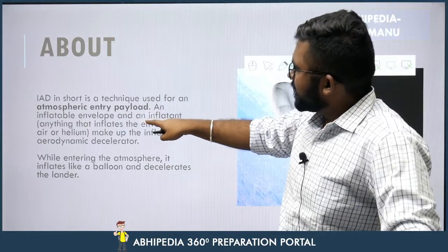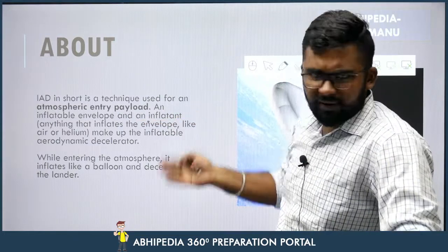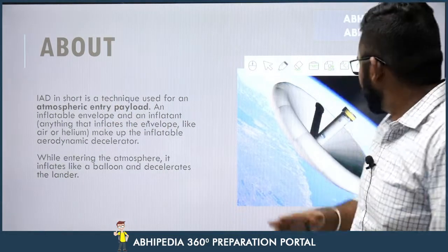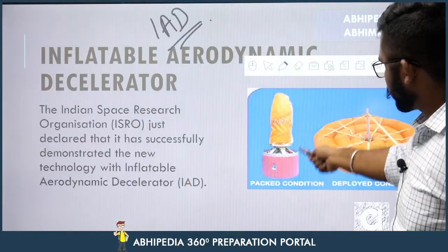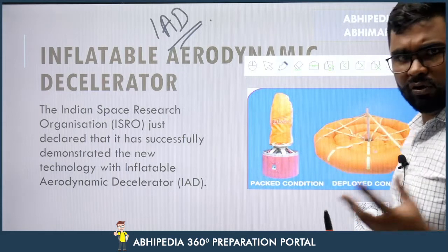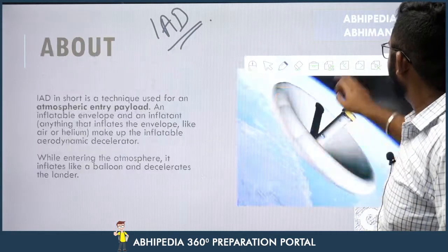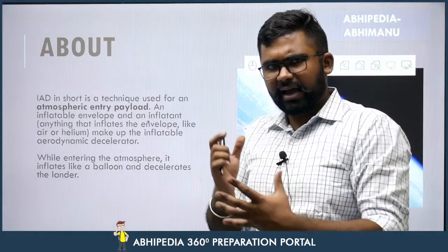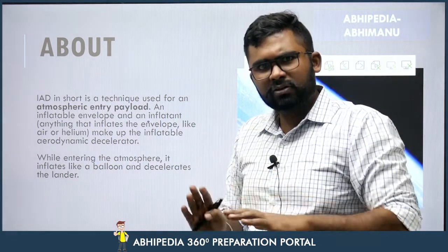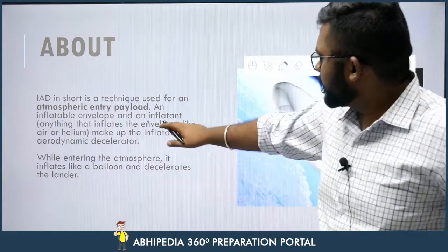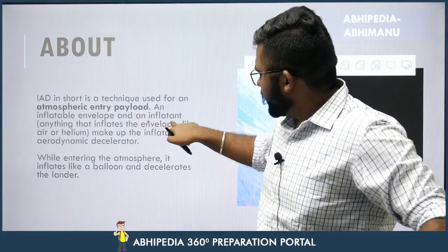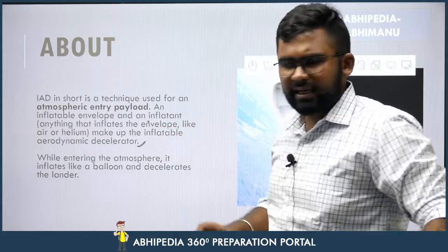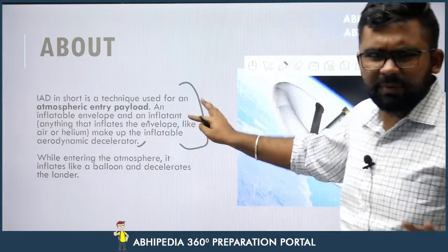IAD consists of an inflatable envelope and an inflatant. Inflatant kya hota hai? Anything that inflates the envelope — like air or helium. The inflatant is designed to fill the inflatable envelope such that it surrounds the payload meant to enter the atmosphere of a planet or satellite, and causes aerodynamic forces to slow it down.